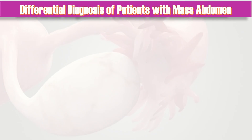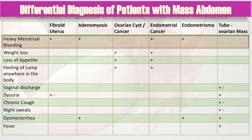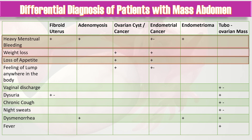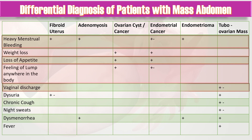Keep in mind the differential diagnosis of mass abdomen. The history of heavy menstrual bleeding increases the possibility of fibroid uterus, adenomyosis, endometrial cancer, and/or endometrioma. If the patient gives history of weight loss, loss of appetite, or feeling of lumps anywhere in the body, think about the possibility of ovarian cancer or endometrial cancer. Vaginal discharge may or may not be present in patients with tubo-ovarian mass, especially due to PID.